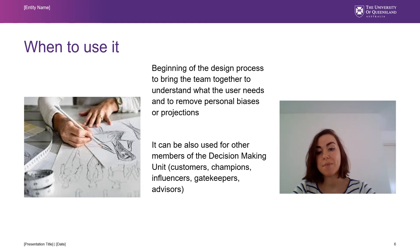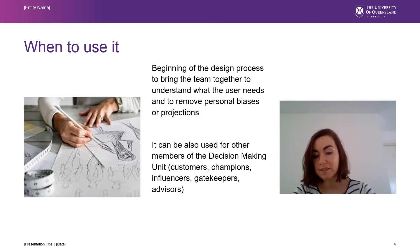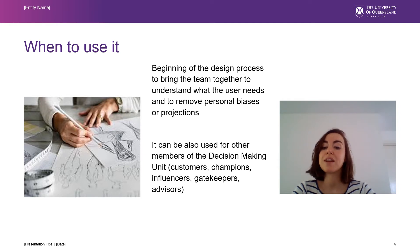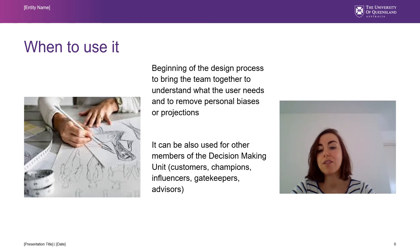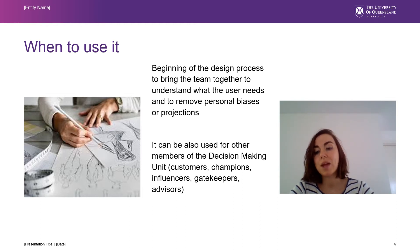You can also use the empathy map to gather information from all the people in the decision making unit — for example, customers, champions, influencers, gatekeepers, advisors. So it can be useful to gather, prioritize, and categorize information obtained from any interaction with anyone in the decision making unit. We will focus on how that applies to the user in this video, but it can be done for any other member.